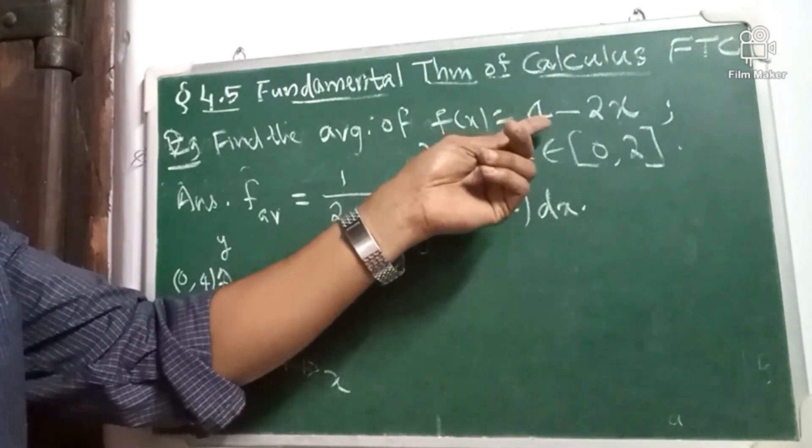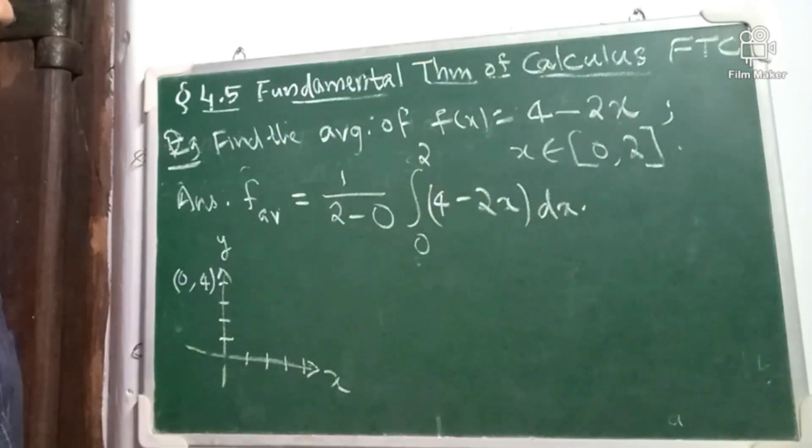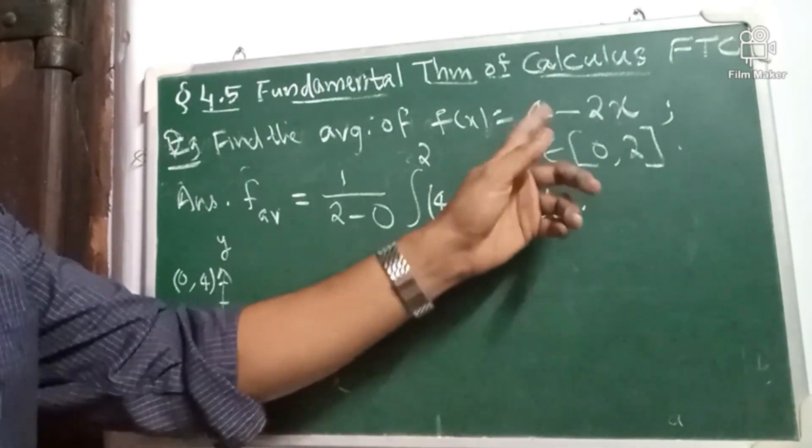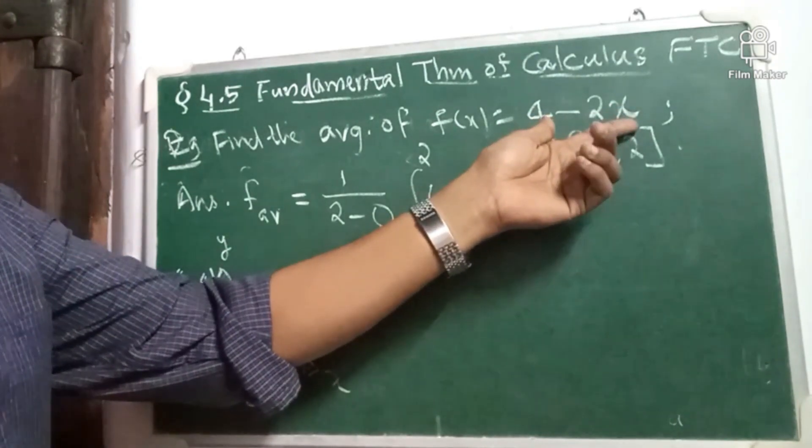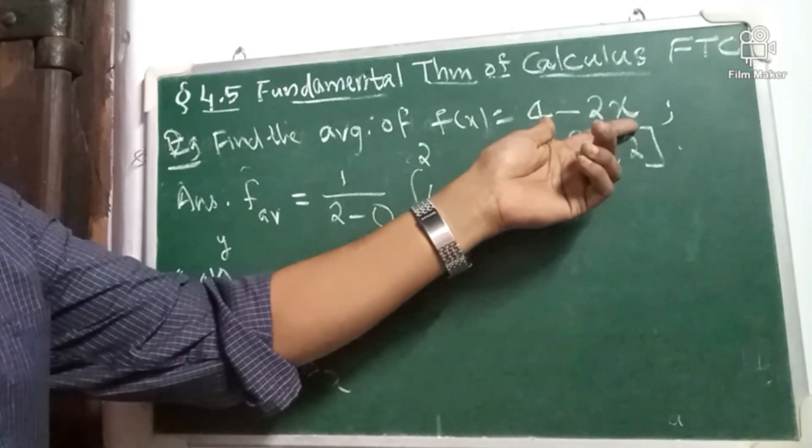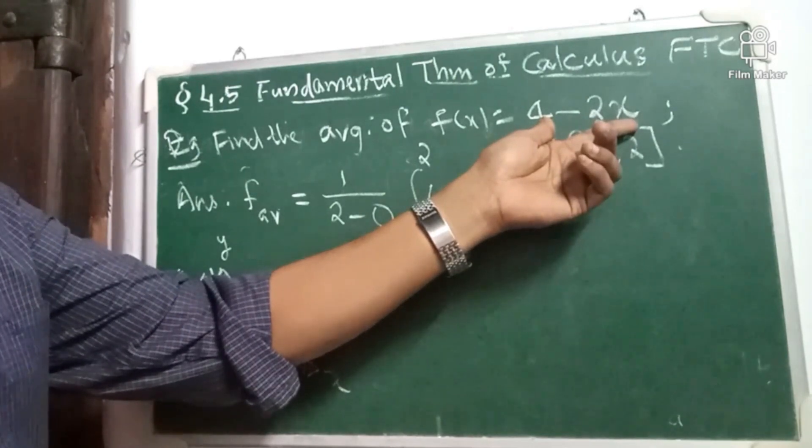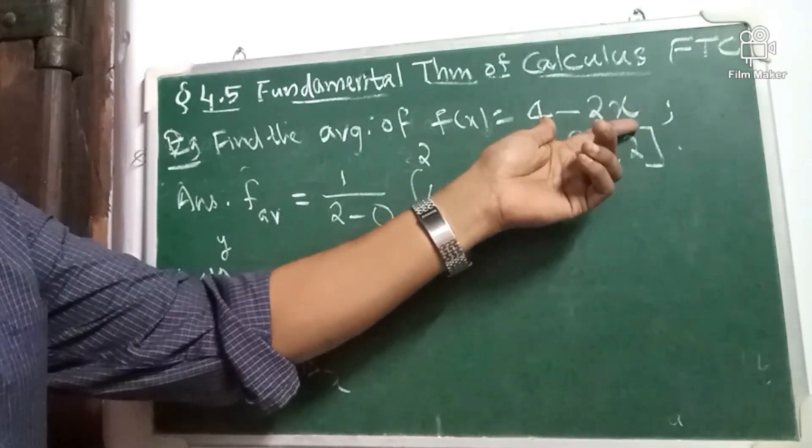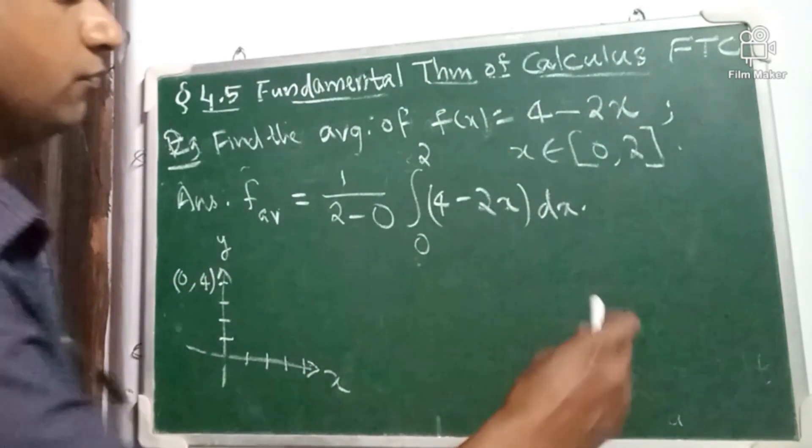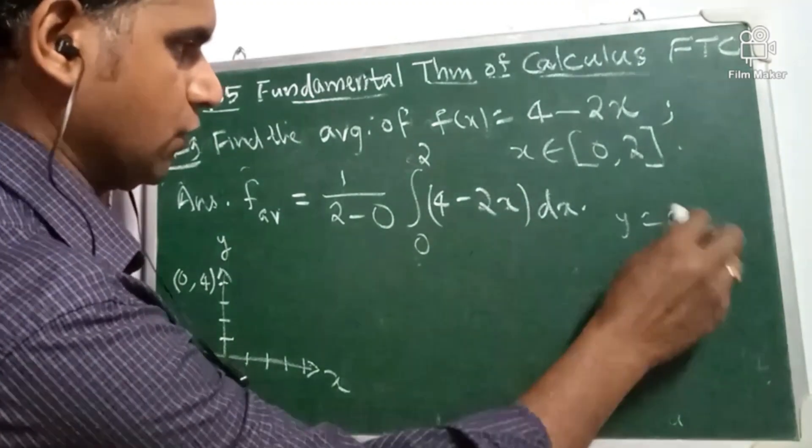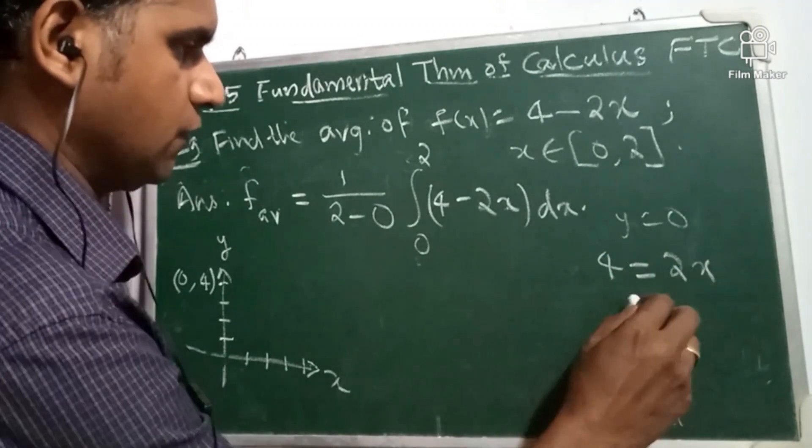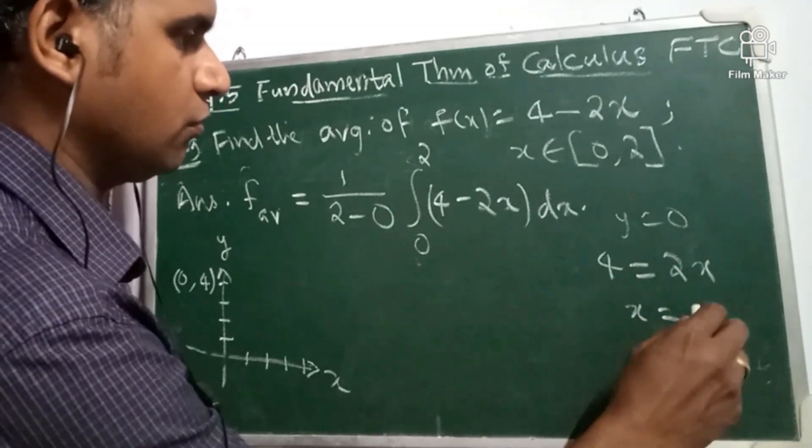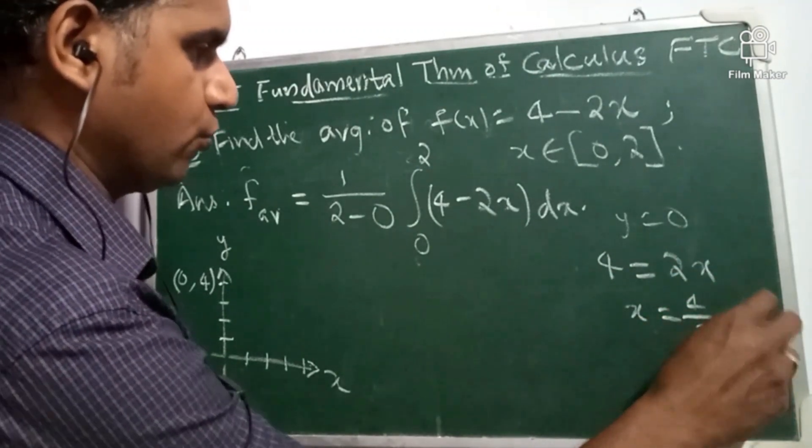So, assume 4 minus 2x is equal to 0. That means 4 is equal to 2x. x is equal to 4 by 2 equal to 2. Y equal to 0 means 4 is equal to 2x. x is equal to 4 by 2 equal to 2.